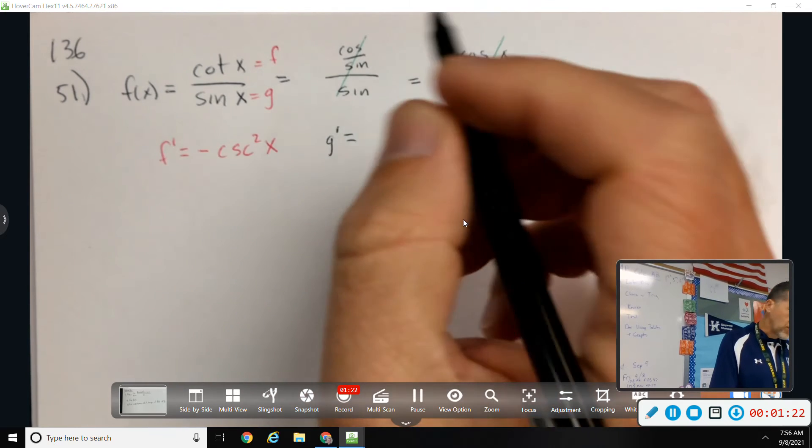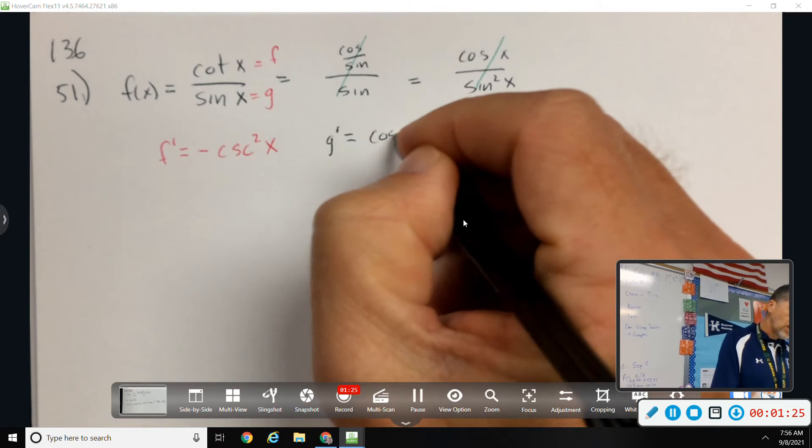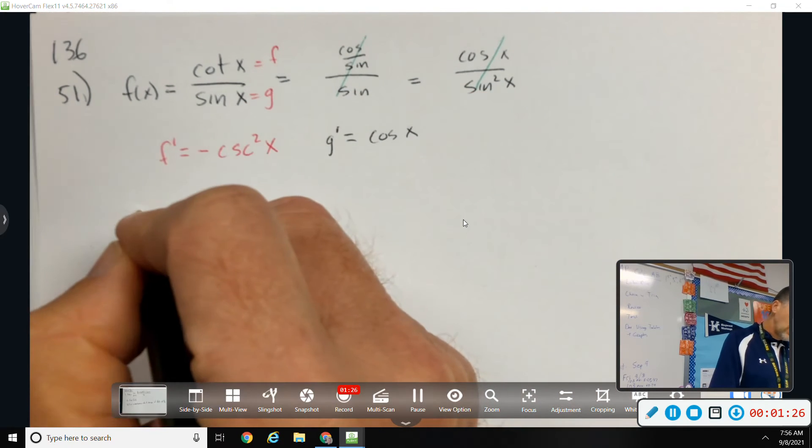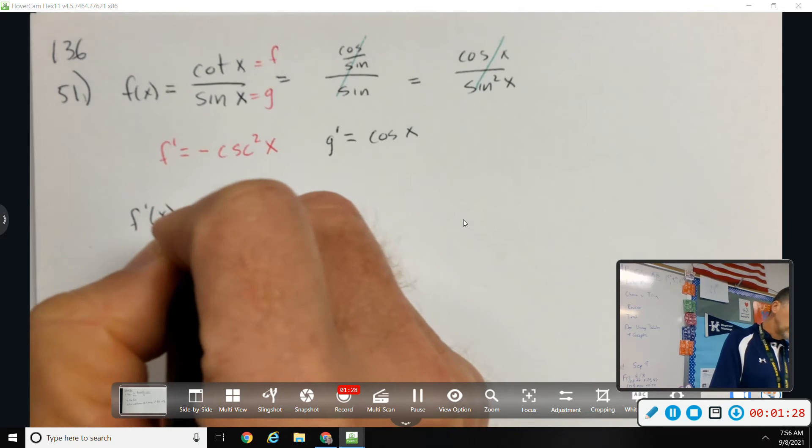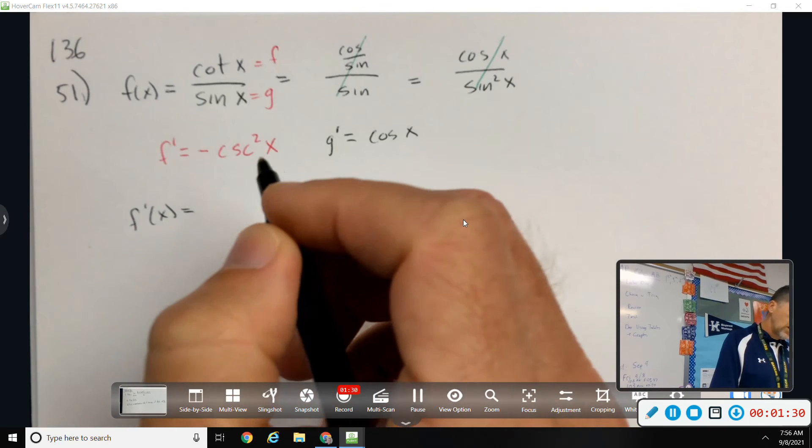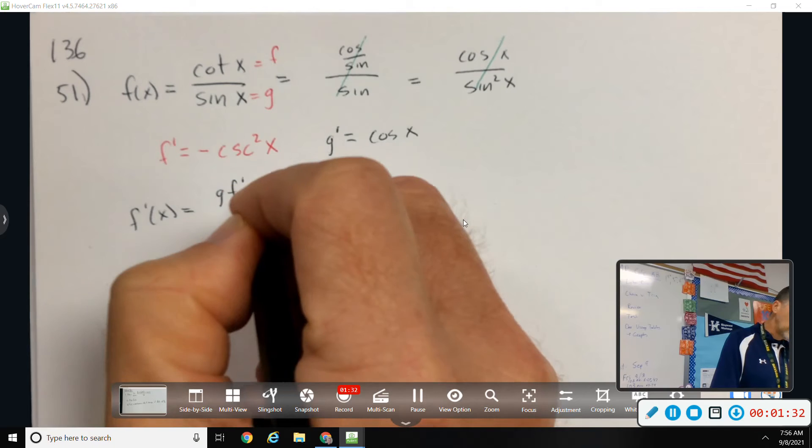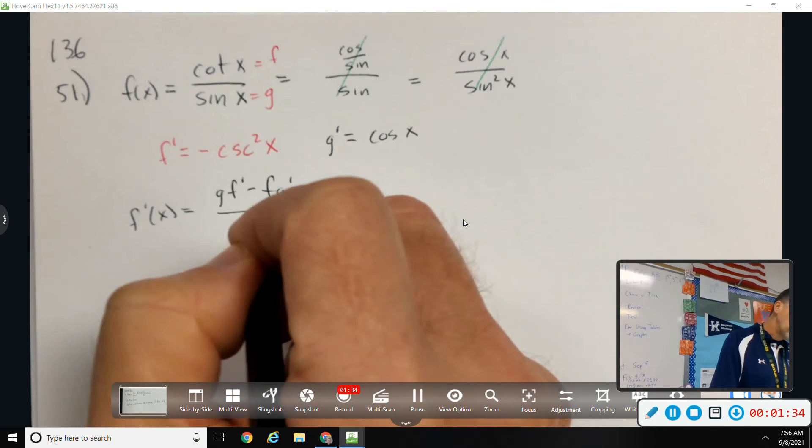So, G prime, we use sine and cosine a bunch. Derivative of sine is cosine. And then the quotient rule is, I'm going to write it out so I don't mess it up. G F prime minus F G prime over G squared.